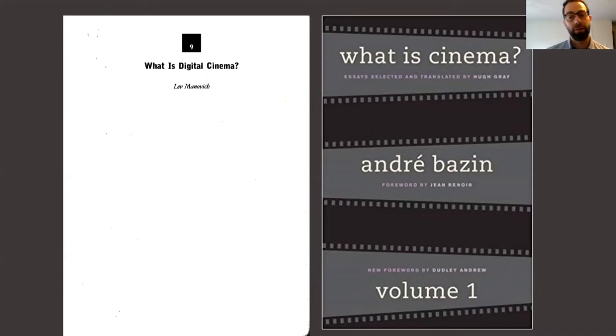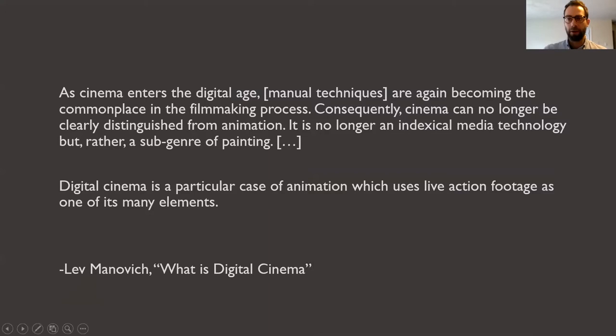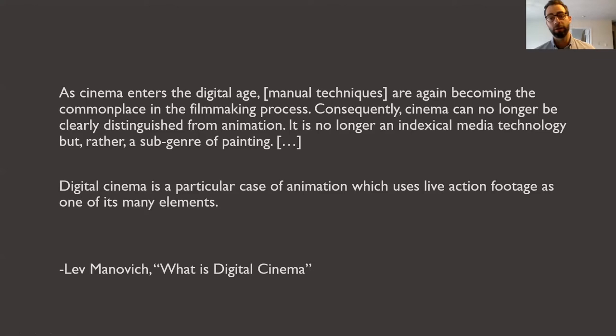Here is one of the most useful quotations from Manovich, where you can really get the main kernel of his argument. He says: as cinema enters the digital age, manual techniques are again becoming the commonplace in the filmmaking process. Consequently, cinema can no longer be clearly distinguished from animation. It is no longer an indexical media technology, but rather a subgenre of painting. Digital cinema is a particular case of animation which uses live action footage as one of its many elements.